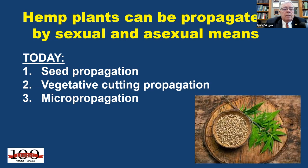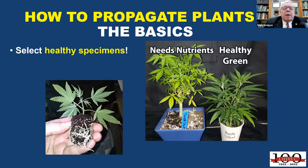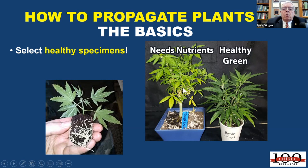Before we get into specifics, let's talk about some general basics for propagation. One of the most important things to remember is that healthy plants produce healthy propagules. Whether starting with seeds or cuttings, you want to start off with healthy mother plants — sometimes called stock plants. This picture on the right shows a hemp plant that hasn't been fertilized well — it's yellow and weak — compared to a well-fertilized hemp plant with strong stems ideal for generating cuttings.